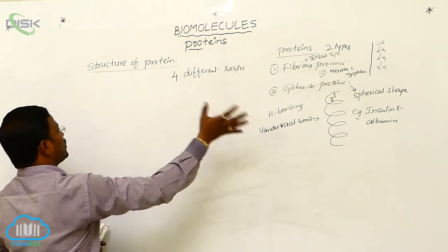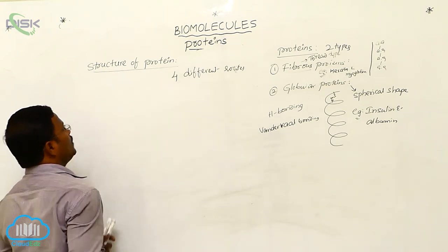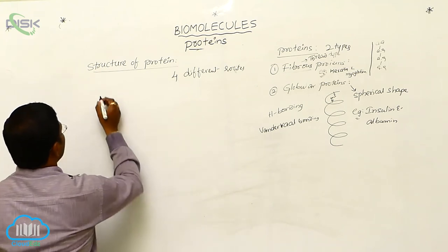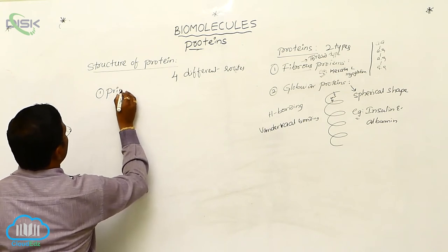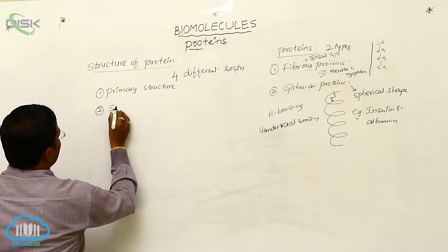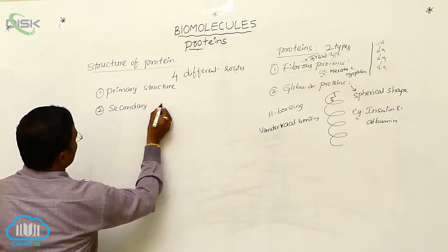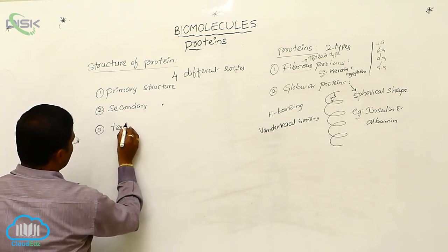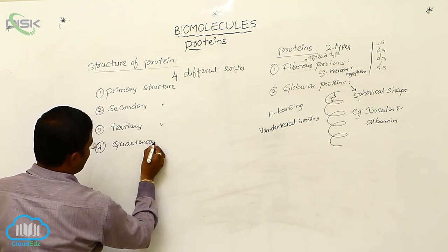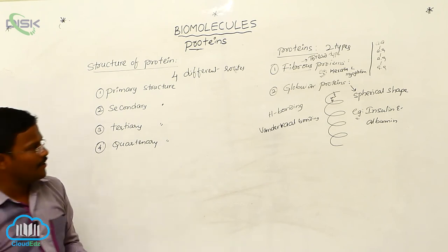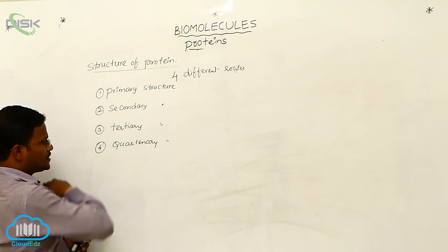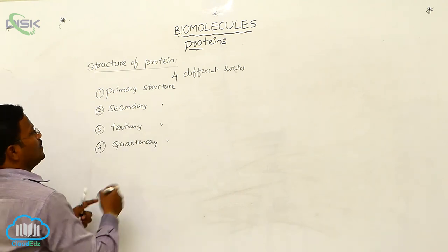Now extending our topic on proteins, the structure of proteins is represented in four different methods: primary structure, secondary structure, tertiary structure, and quaternary structure. These are the four different levels used to describe protein structure or shape.